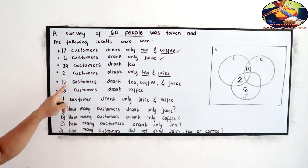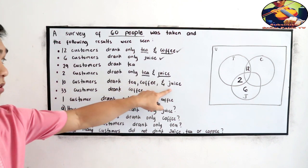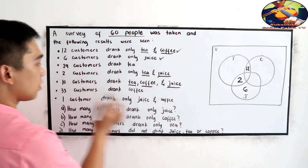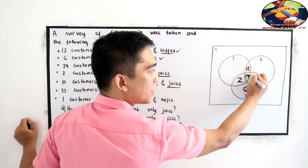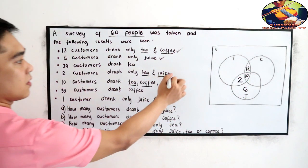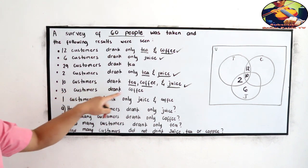Next. 10 customers drank tea, coffee and juice. Intersection of the 3 events. There are 10. Tea, coffee and juice. 10 here. We're done. 33 customers drank coffee.